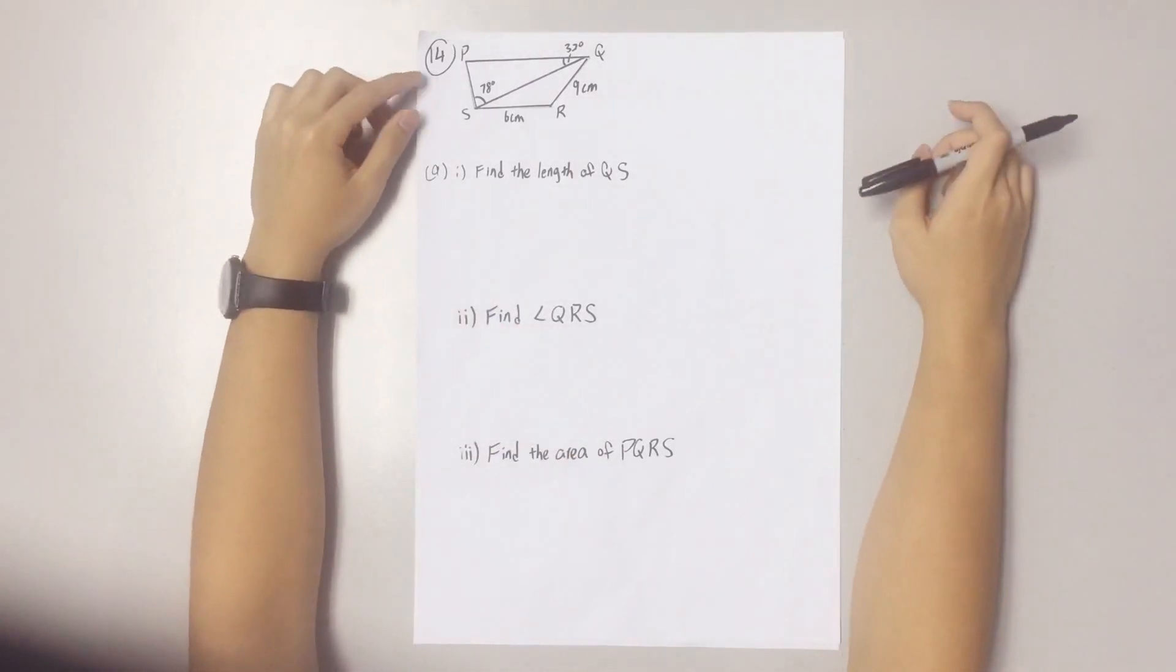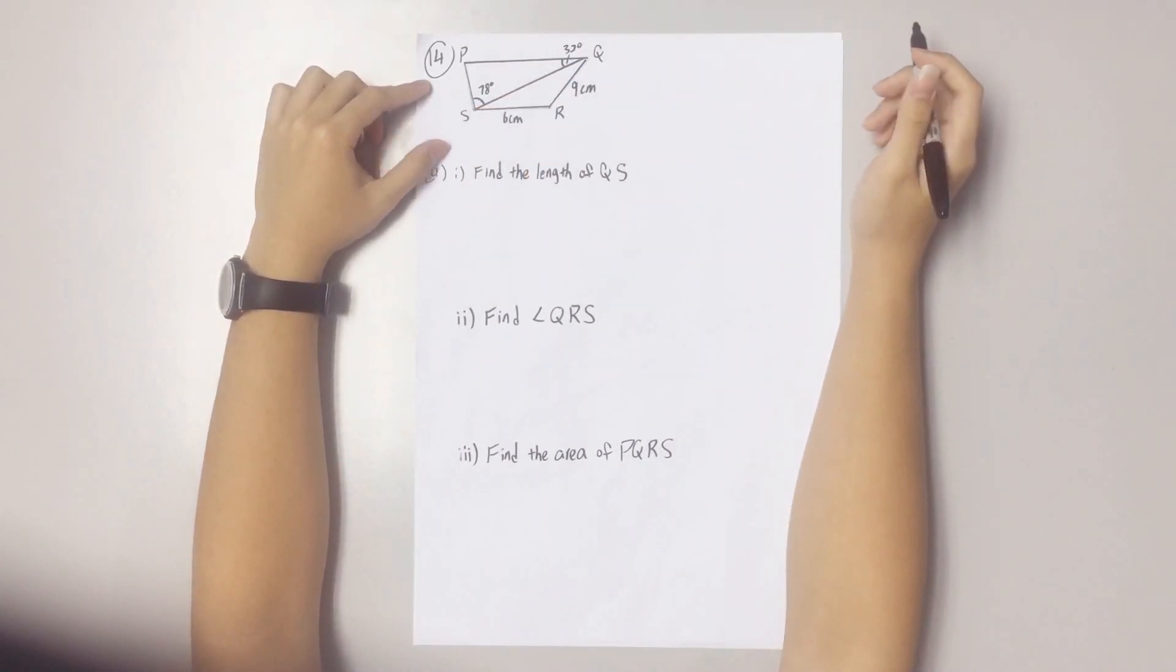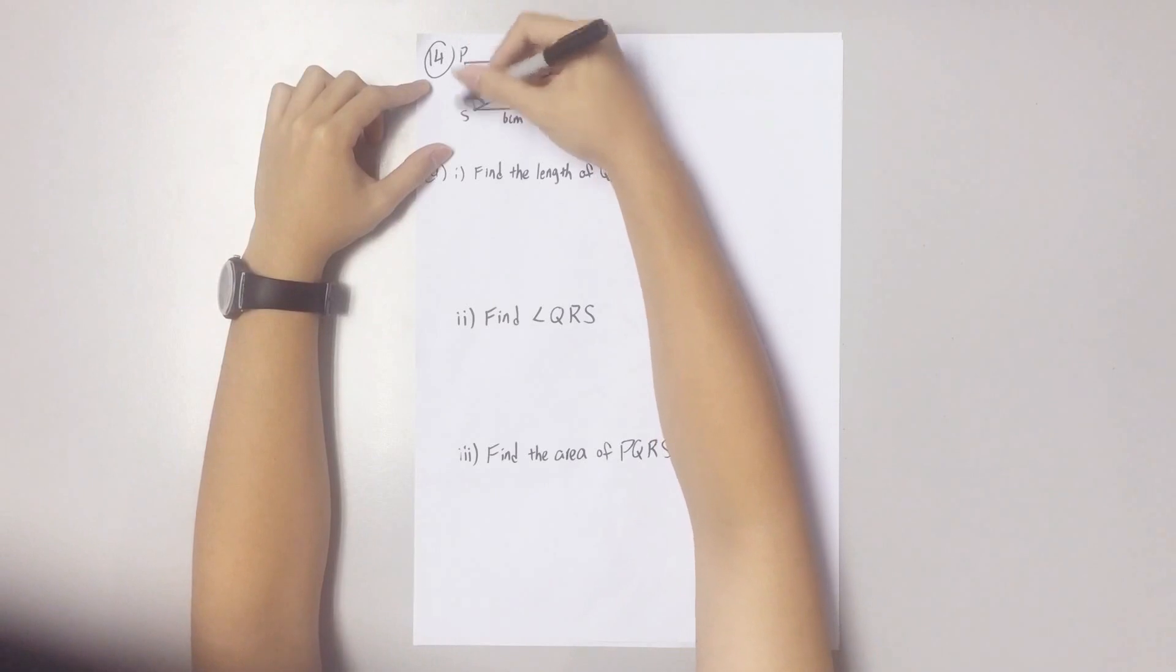Let's start with A1. Find the length of QS. Before you find the length of QS, you must first find this angle SPQ.